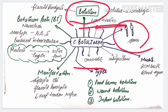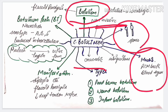The disease botulism is manifested as flaccid paralysis, which is one of its main characteristics. Flaccid paralysis is a neurological condition in which muscle tone is reduced, leading to a state of paralysis.